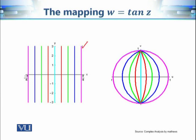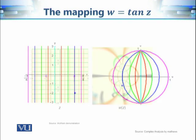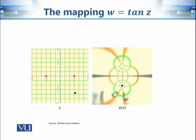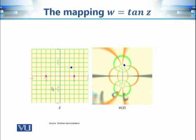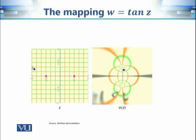We can see that each line segment is mapped onto a circular arc in the w-plane. You can match the colors to track what each line segment from the z-plane maps to. This line segment maps onto this circular arc, and similarly for the others. That is the image of these line segments under the mapping tan(z).